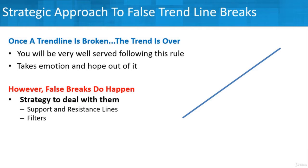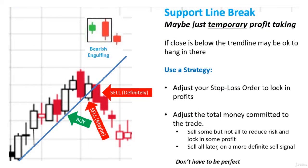We're going to talk about how we can use support and resistance lines in terms of our strategy, and also how to apply filters around this. So let's get into how we might deal with these potential false breakouts in terms of strategy. Let's say we saw this happening — we've got this nice uptrend that we bought into, and we first see the support line is broken. You're thinking maybe that's just temporary profit taking. We had this nice long trend and bought in on the third touch, and maybe it's just going to go down or sideways a little bit and then resume that trend.